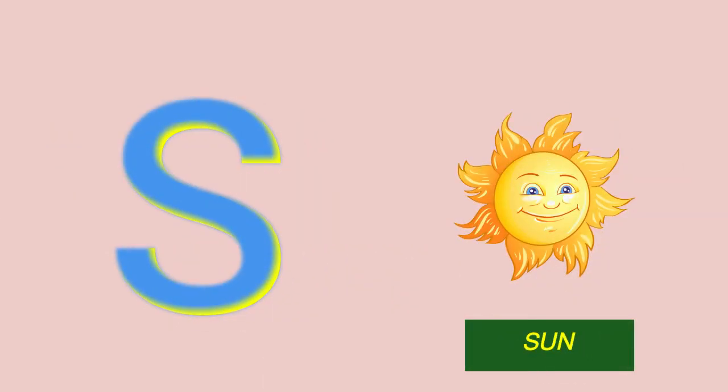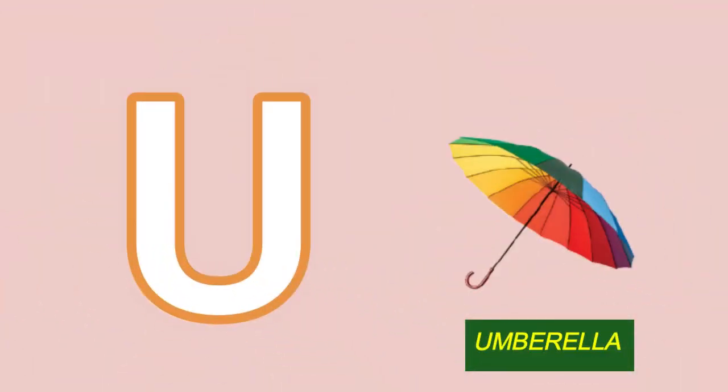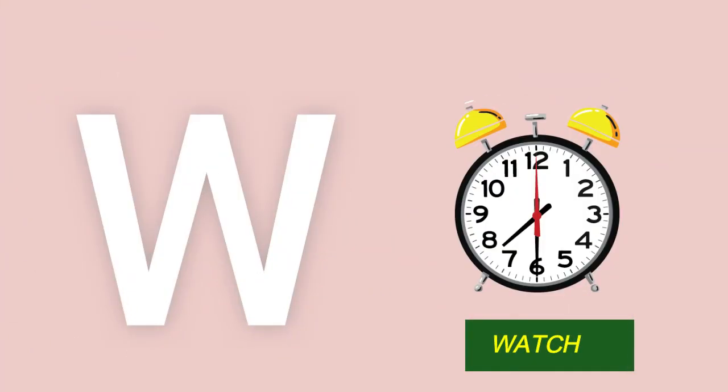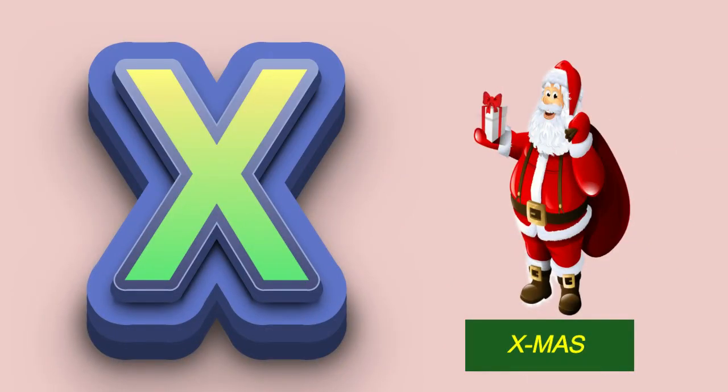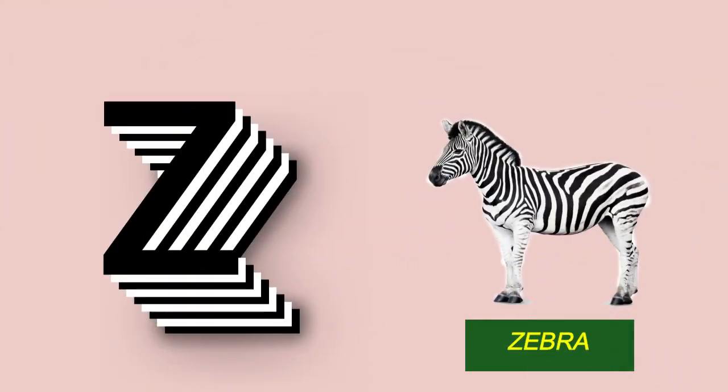S for sun, T for tiger, U for umbrella, V for van, W for watch, X for Christmas, Y for yacht, Z for zebra.